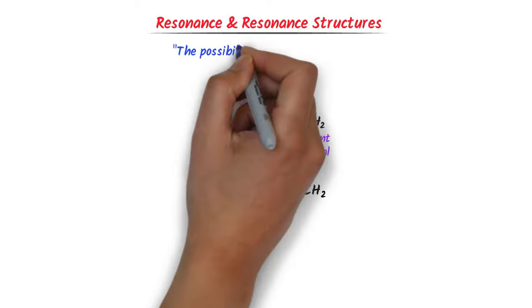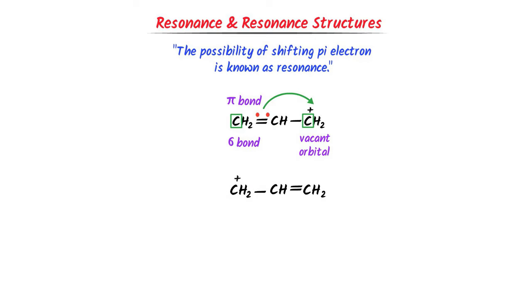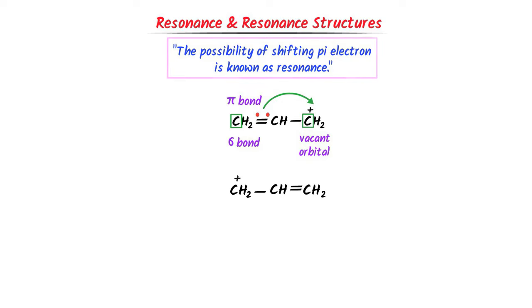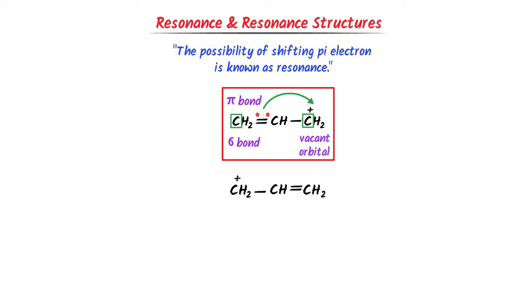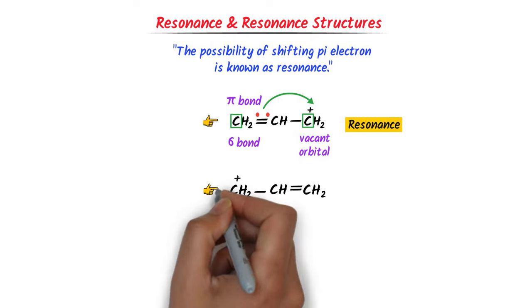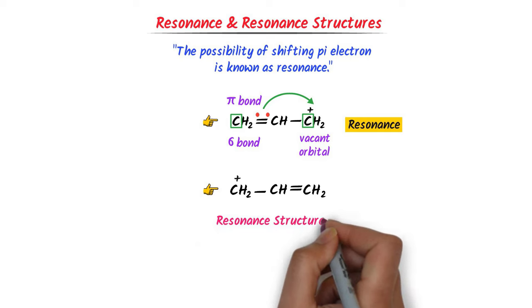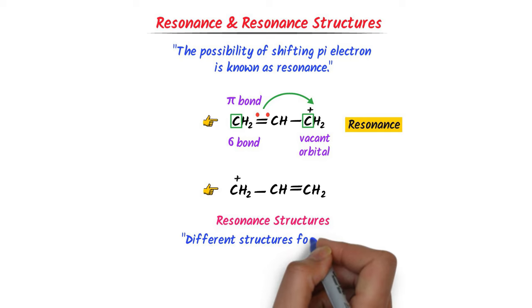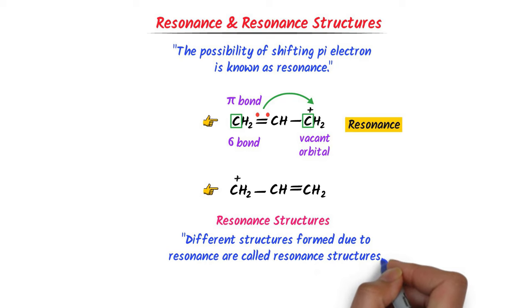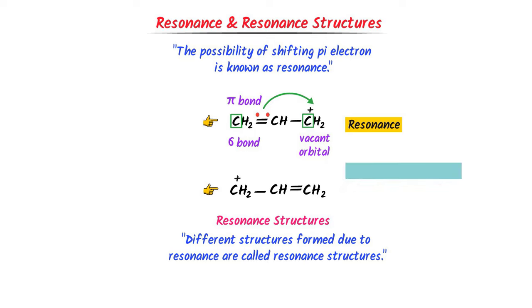We define resonance as the possibility of shifting pi electrons. Due to resonance, we get two different structures of the same molecule. We define resonance structures as different structures formed due to resonance. So we say that these two structures are called resonance structures or resonating structures.